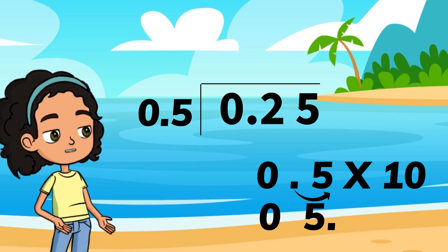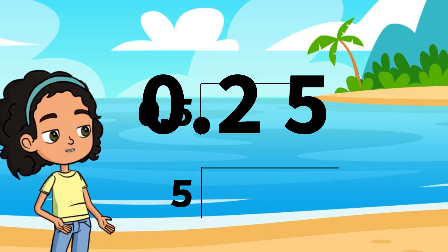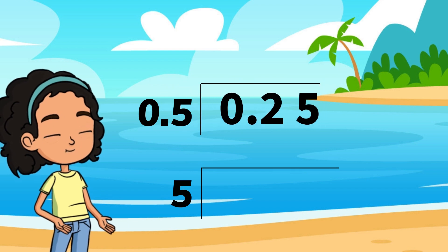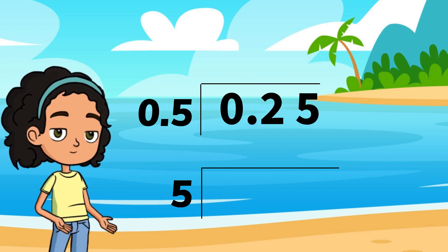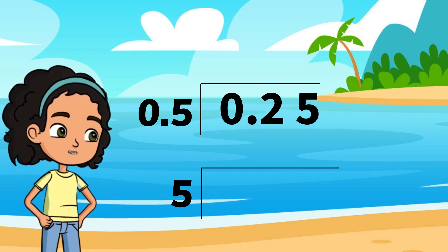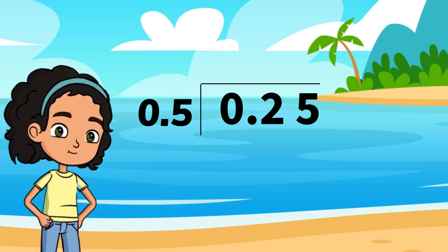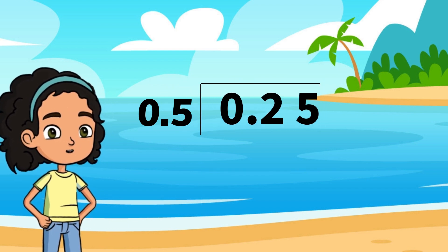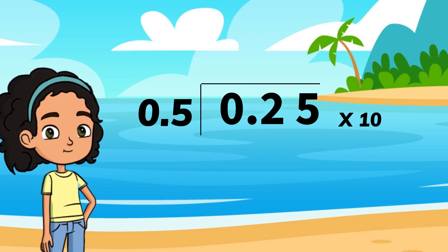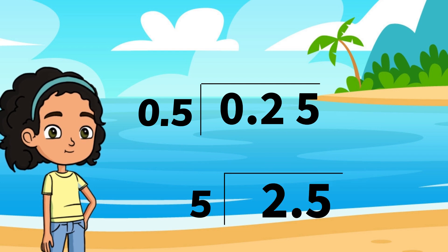Anything you do to your divisor, you have to do to your dividend. So you are multiplying twenty-five hundredths by moving one place over. Your new dividend is two and five tenths.